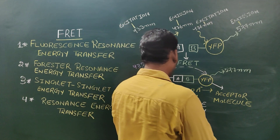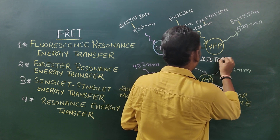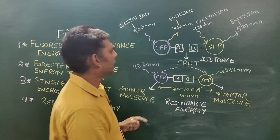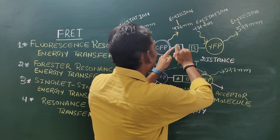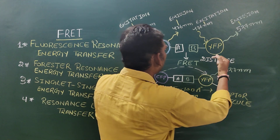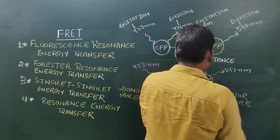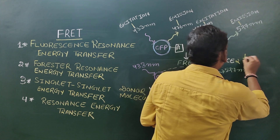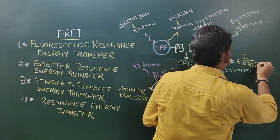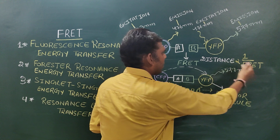FRET is a distance-dependent phenomenon. If the distance between two fluorescent molecules increases, the efficiency of FRET decreases. FRET has an inverse relationship with distance: distance increases → FRET decreases; distance decreases → FRET increases.